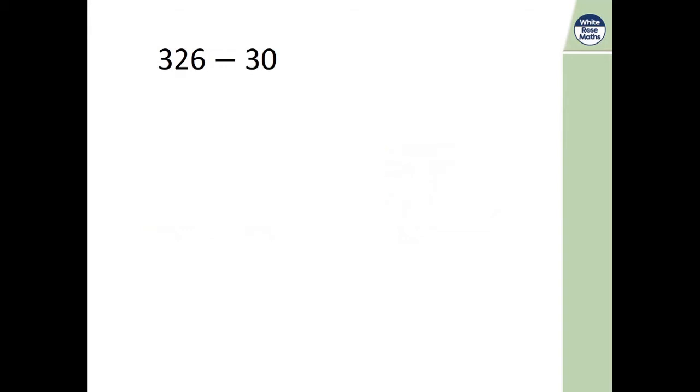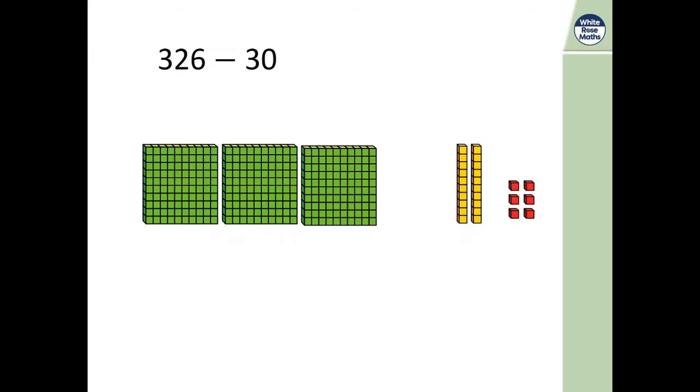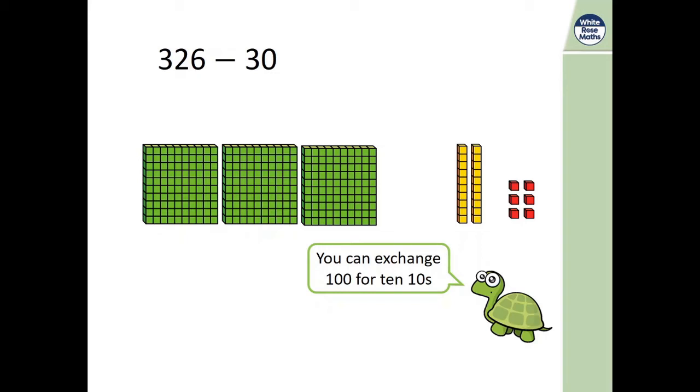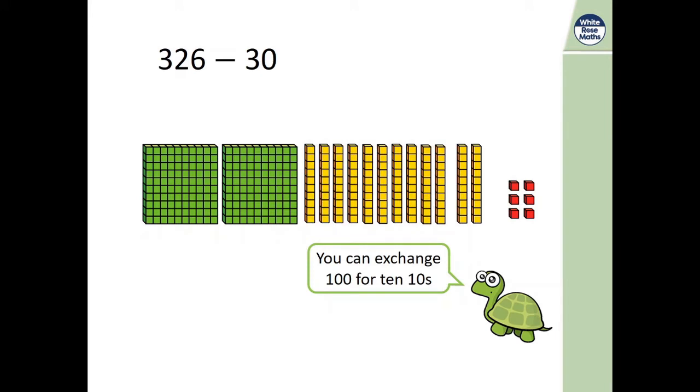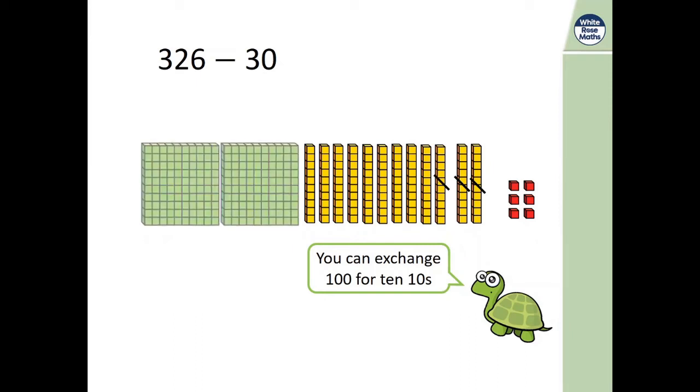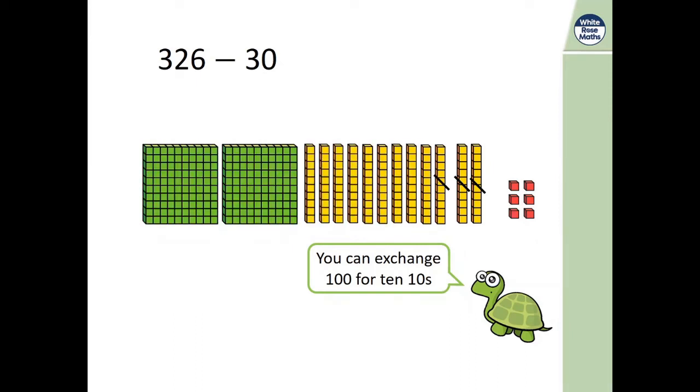Let's look at one more together. Here's our 326 again. And this time we need to subtract 3 10s or 30. But we only have 2 10s here. Have you come to help us? Yes, you're quite right. We don't have enough 10s here to subtract 30. So we need to exchange one of our 100s for 10 10s. Let's do that now. Now we can subtract 3 10s. Can you see what's left? We have 2 100s, 9 10s and 6 ones. Yes, it's 296. Thanks for your help.